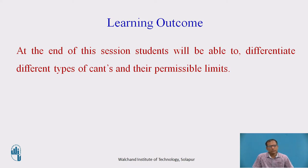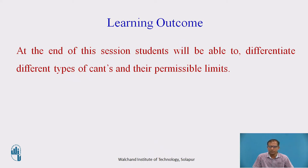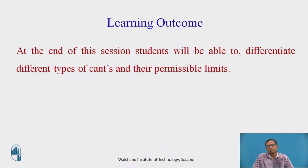The learning outcome of today's session: at the end of the session, students will be able to differentiate different types of cant and their permissible limits. In the previous session, we derived the equation of superelevation — that is, the equilibrium superelevation taking the equilibrium speed. Today, we will see the different types of cant related to the Geometry Design of Railway Track.